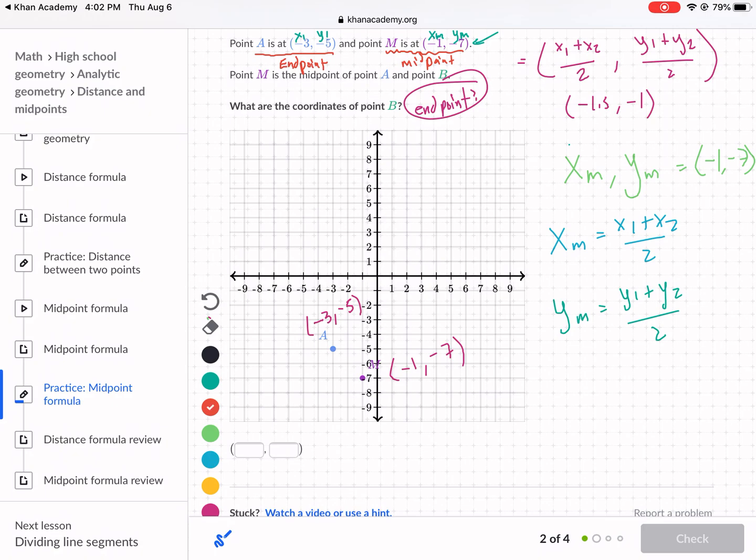What we need to do is plug in what we know. So instead of writing XM, I'm going to write negative 1 because that's the value of XM. X1, I wrote as negative 3. So negative 3 plus X2 divided by 2. Next, I'm going to write my formula for YM. So YM is negative 7. That's equal to my Y1, negative 5, plus Y2 divided by 2. And I can solve for that.